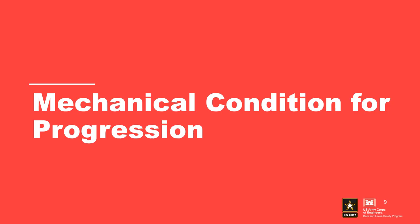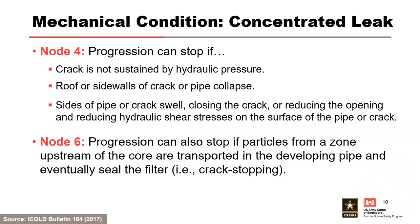The mechanical condition for progression. Progression can stop if a crack is not sustained by hydraulic pressure, if the roof or sidewalls of a crack or pipe collapse, or if the sides of a pipe or crack swell, either closing the crack or reducing the opening size, which reduces the hydraulic shear stresses on the surface of the pipe or crack. Progression can also stop if particles from an upstream zone of the core are transported into the developing pipe and eventually seal the filter, which is known as crack stopping.